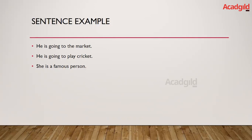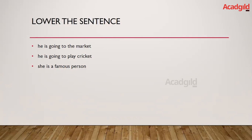Now let us see how we can apply bag of words to these sentences and convert them into a document matrix. The first step is always to convert the sentences into lowercase. After lowering the sentences all capital letters become small letters. The main reason for lowercasing is to prevent duplication of the same words that may appear in different cases across sentences.